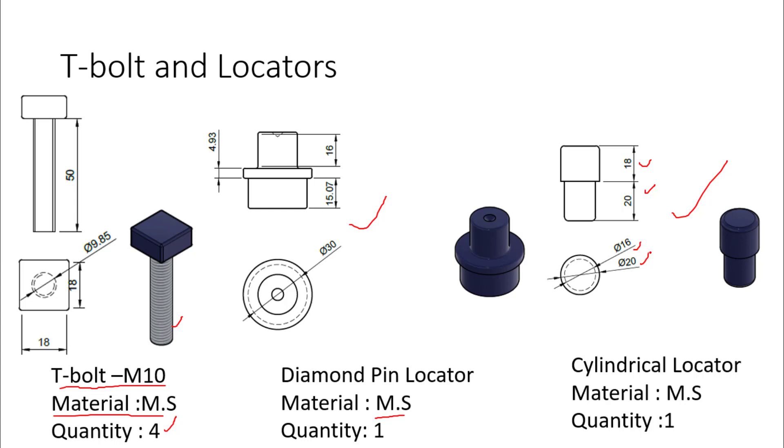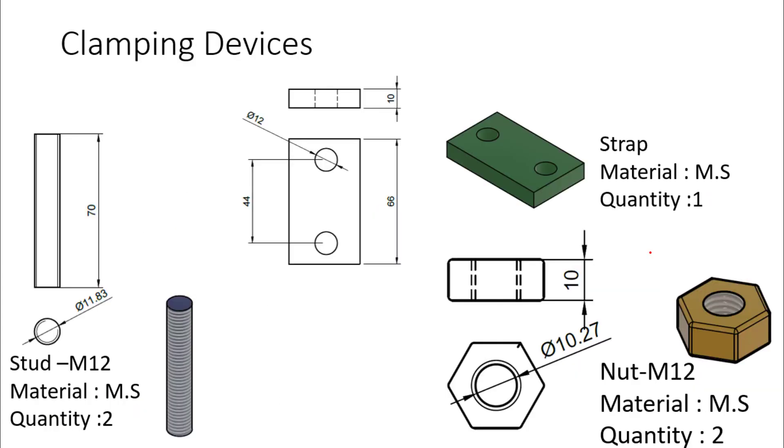Clamping devices are used to clamp the workpiece with the fixture body or we can say that it resists the thrust produced by action of the milling cutter. So milling cutter will produce a cutting force and there is a thrust produced opposite to that cutting force. Component will try to lift during machining operation. To resist that lifting of the component we need to clamp the component with the fixture body.